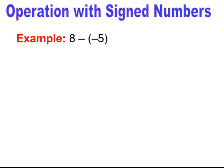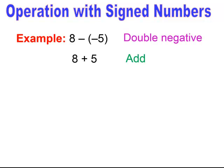Notice here I have eight minus a negative five. Be really careful when you have two signs — you have to clear the two signs first. This is the double negative, and a double negative changes to a plus. So I end up getting eight plus five, and when I do the arithmetic I get positive thirteen as my answer.